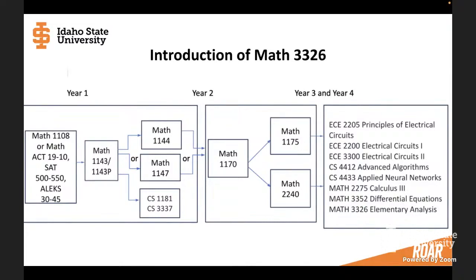For example, electrical, computer engineering students will start taking some 300-level, 200-level courses in their major. And science students can take 300-level, 400-level courses. Students majoring in mathematics, that is the time they will take elementary analysis, the 3326.